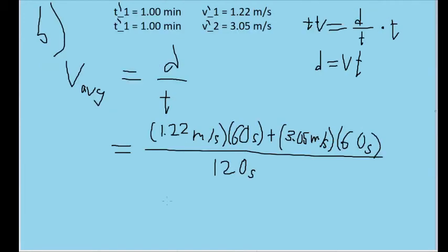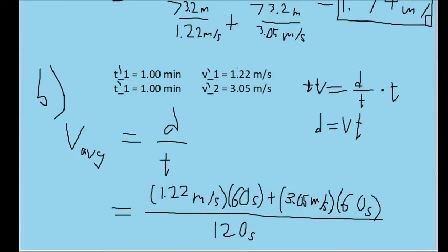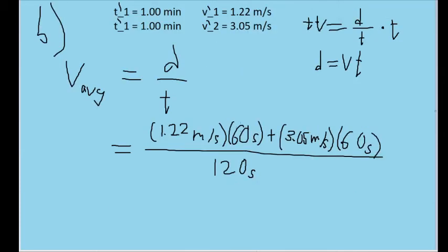And here I have plugged all those values in. So for the first part of the distance, I multiplied 1.22 meters per second by one minute, except I changed the minutes into seconds, and one minute has 60 seconds. And I did that so that the units would cancel out more evenly, because we are given the speed in terms of meters per second. And we'll want those units to cancel out on the numerator if we're looking for an answer in terms of speed.